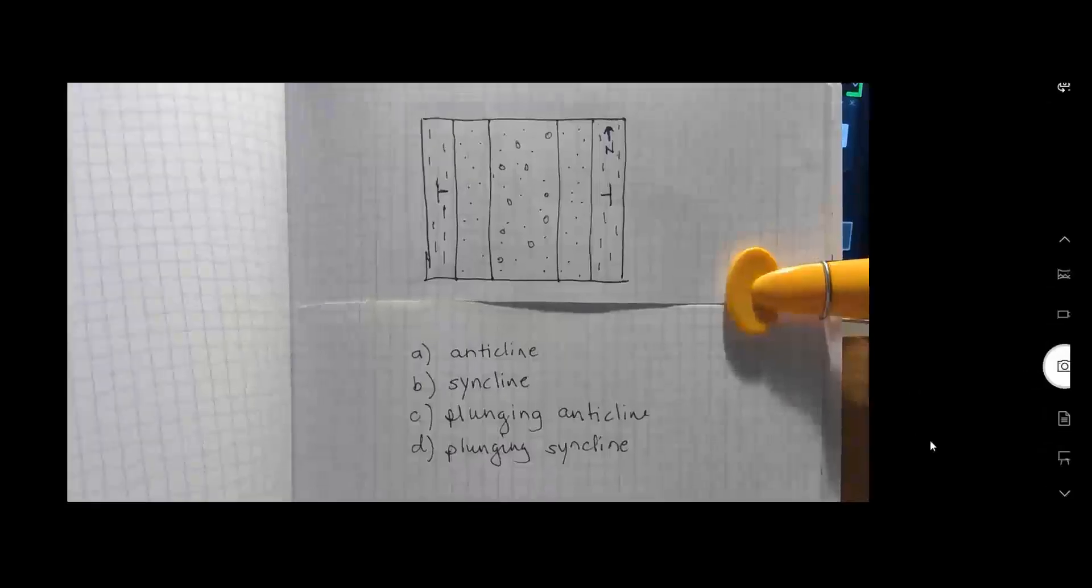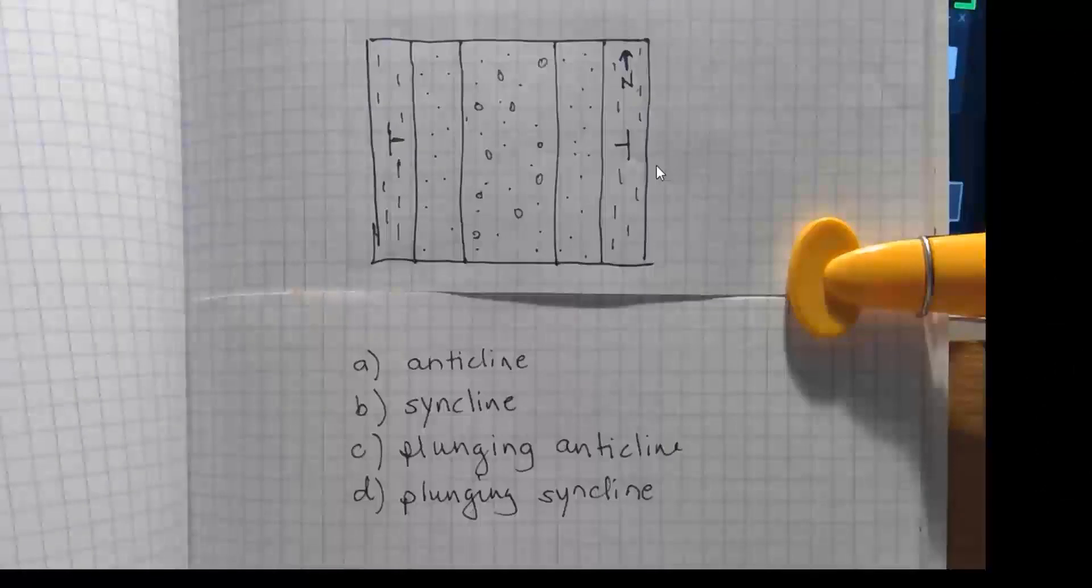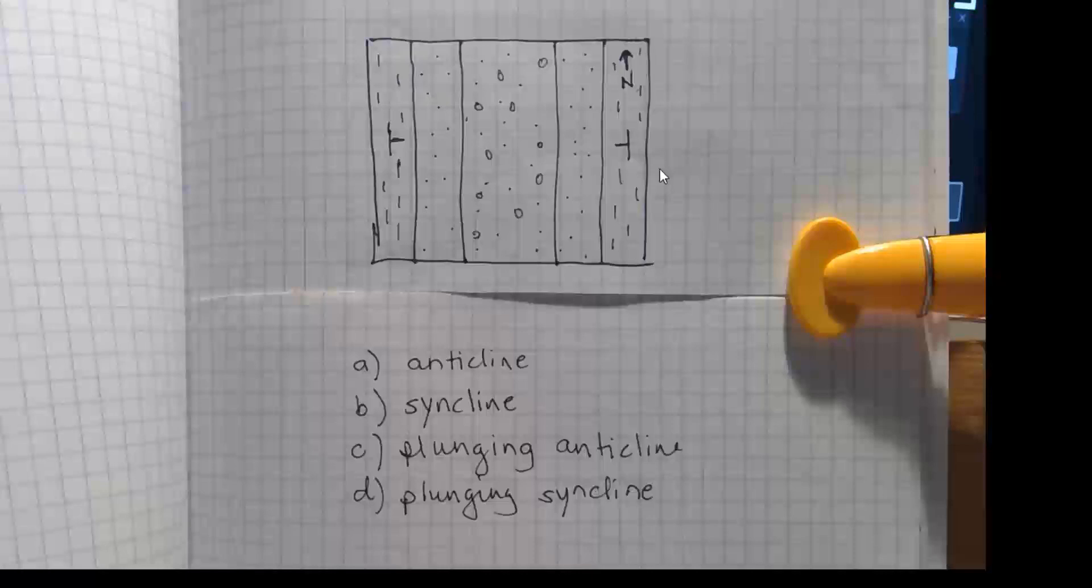Let's do this one here. We have a geologic map. What kind of fold is in the subsurface underneath this geologic map? Is it an anticline, a syncline, a plunging anticline, or a plunging syncline?